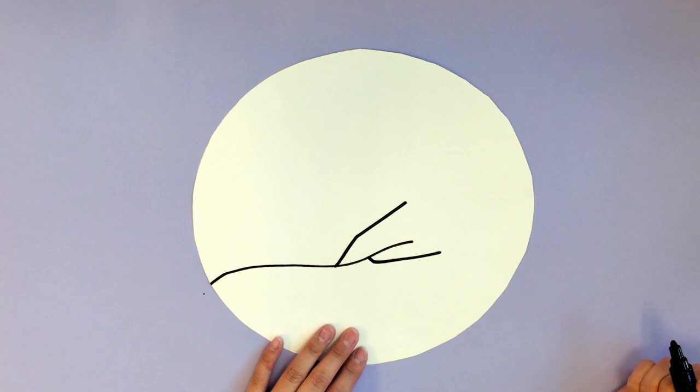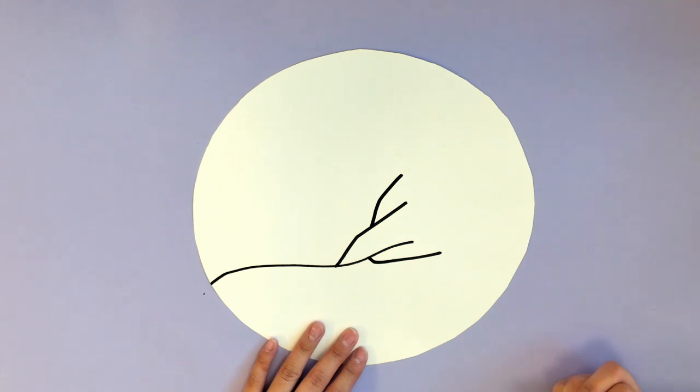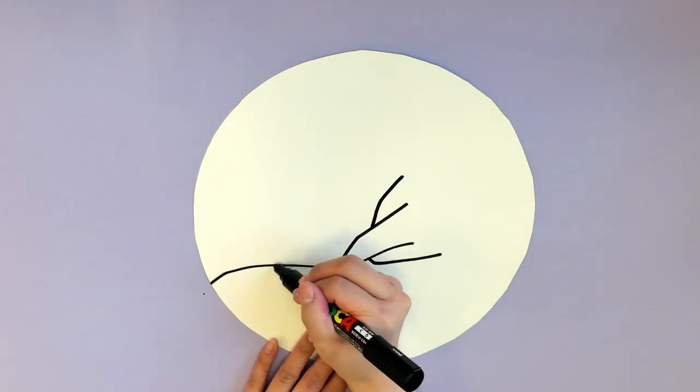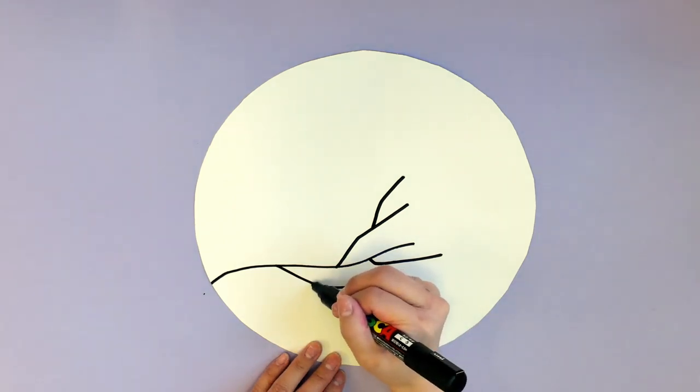These are going to be smaller branches that go on our branches we just made. And I'll keep making it until I think that it looks right. Make sure to draw enough branches for your cherry blossoms to sit on.